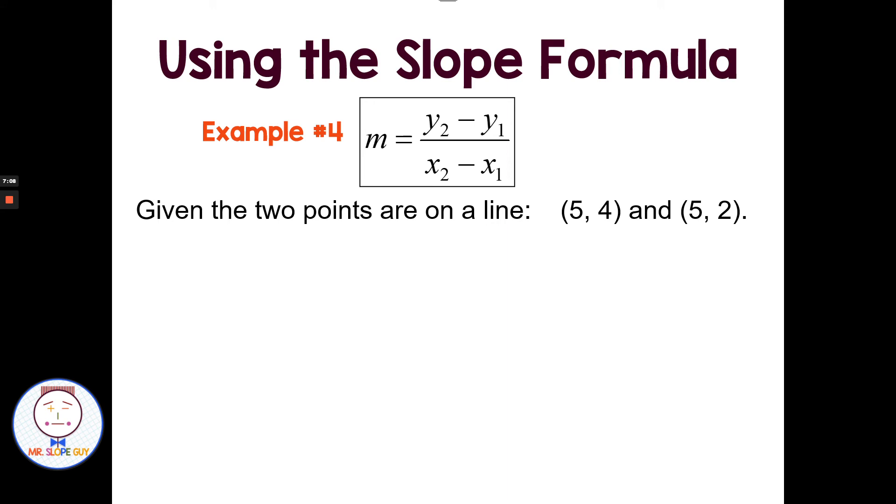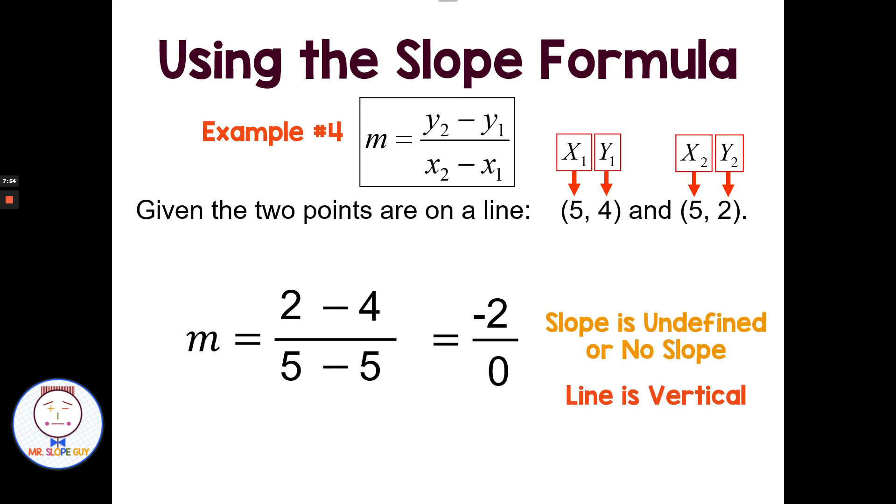All right. So let's try the slope formula again. We're given two points that go through a line. And this time we're given points (5, 4) and (5, 2). We can identify the x sub 1, y sub 1, x sub 2, y sub 2. Put my little slope formula set up with subtraction on the top, subtraction on the bottom. Then I just have to go through and do a little substitution. And on the top, 2 minus 4 is -2. And 5 minus 5 is 0. Zero in the denominator is undefined. So I have undefined or no slope, which tells me the line is vertical.